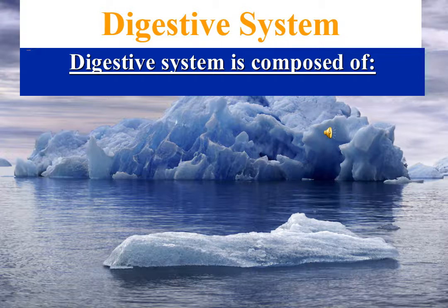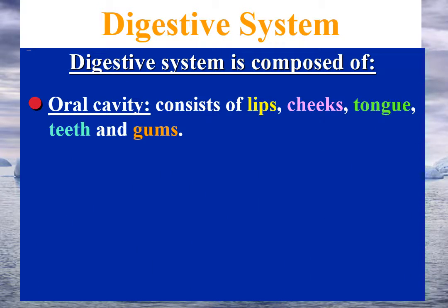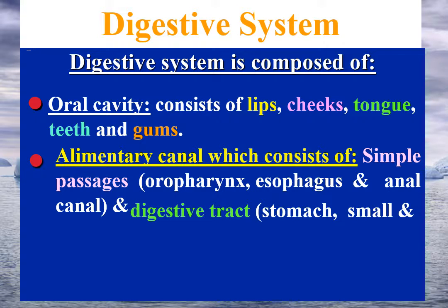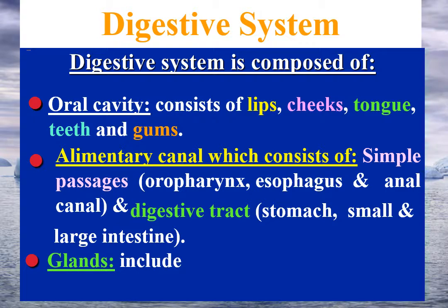The digestive system is composed of the oral cavity and its contents — lips, cheeks, tongue, teeth, and gums — the alimentary canal, which consists of simple passages such as the oropharynx, oesophagus, and anal canal, and the digestive tract, which includes the stomach, small intestine, and large intestine. Also included are secretory glands connected to the alimentary canal by ducts, such as the salivary glands, pancreas, and liver.